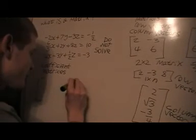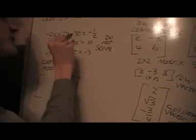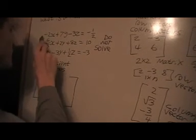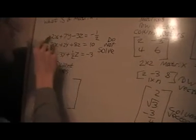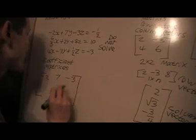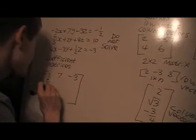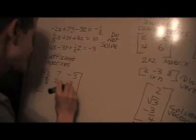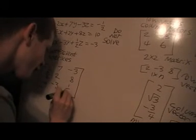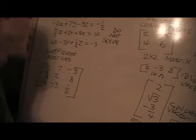Right, now, next thing, what's the coefficient matrix? The coefficient matrix is basically, we'll write the coefficients of each of these variables, and the coefficients are the numbers in front of them. So we'll write minus two, seven, minus three, six, fifths, two, eight, four, minus three, one-half.